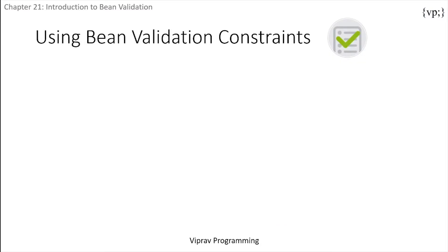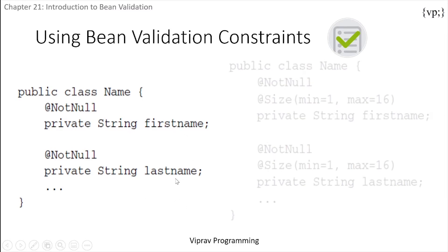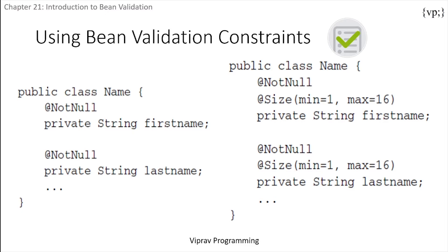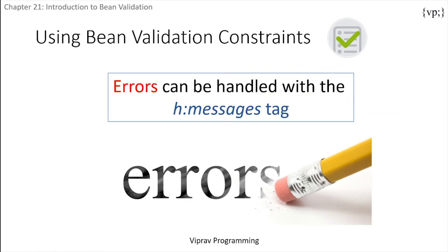Bean validation constraints: a constraint is defined as an annotation. There are many constraints, but here's an example of how they would be placed. Here the variables first name and last name cannot be null. You can also place additional constraints on variables — this example limits the length of the string the variable can hold to a minimum of 1 and a maximum of 16. Any validation failures can be handled with the H messages tag.